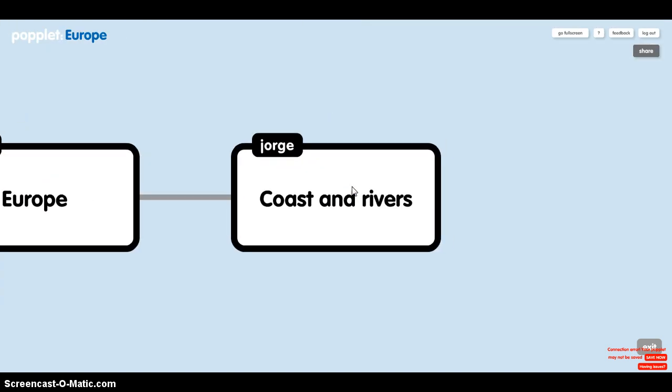Coasts and rivers. Europe has coastlines on the Arctic Ocean, the North Sea and the Baltic Sea in the north; on the Caspian Sea in the southeast; on the Black Sea and the Mediterranean Sea in the south; on the Atlantic Ocean in the west.